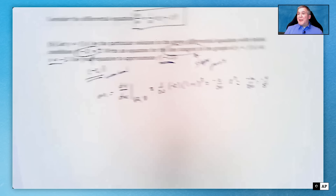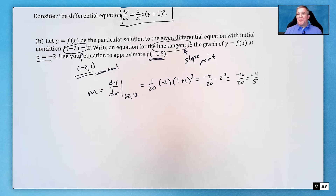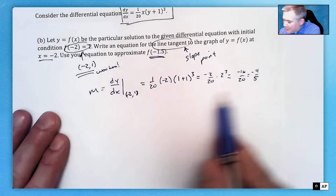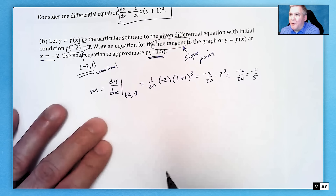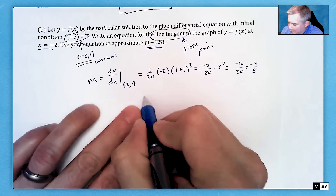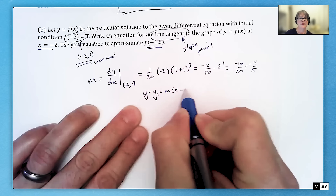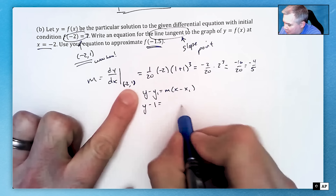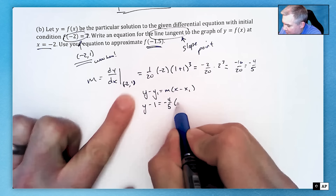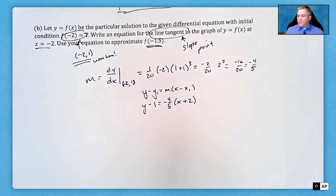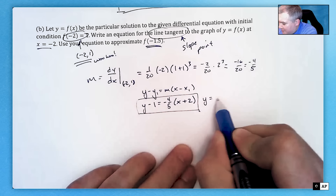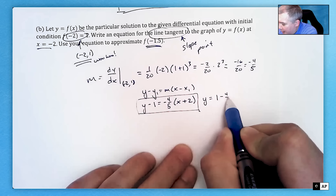Using point-slope form: y − y₁ = m(x − x₁), with point (-2, 1) and slope −4/5, we get y − 1 = −(4/5)(x + 2). You don't have to box your answer, but that's the tangent line equation. I prefer to organize it with the y₁ on the other side, because that becomes function notation for the approximation step.